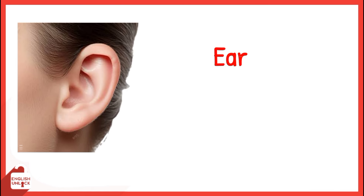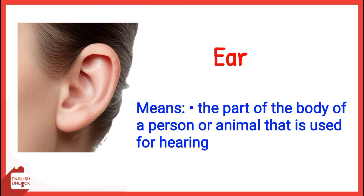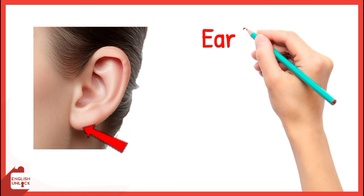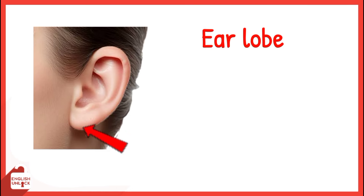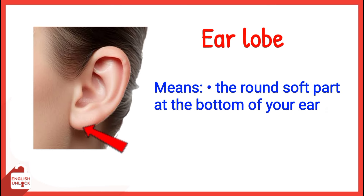Ear means the part of the body of a person or animal that is used for hearing. Earlobe means the round soft part at the bottom of your ear.